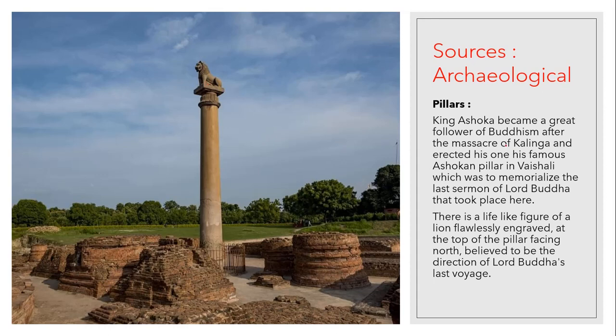In our next video we'll learn how Ashoka became Ashoka the Great and what the Kalinga War is all about — this war was a turning point in the life of Ashoka. Today we covered the sources of the Mauryan Empire: literary sources and archaeological sources. In the next lesson, we will continue with the political system and administration of the Mauryan Empire. Thank you children.